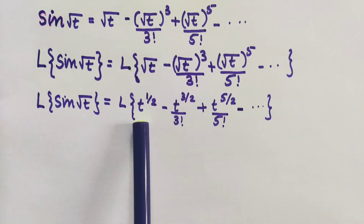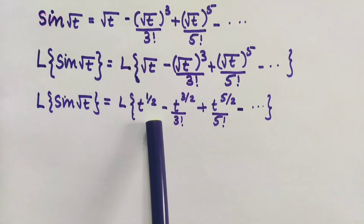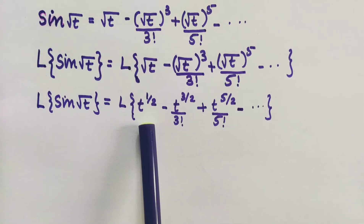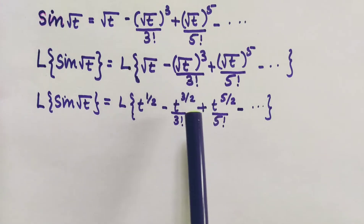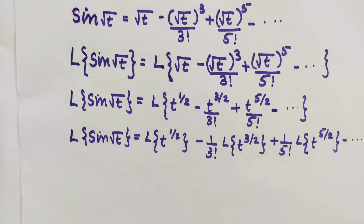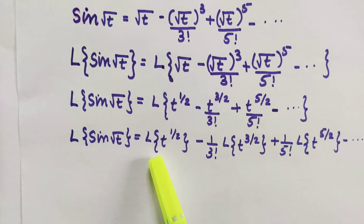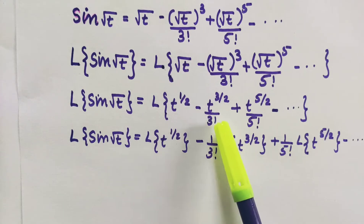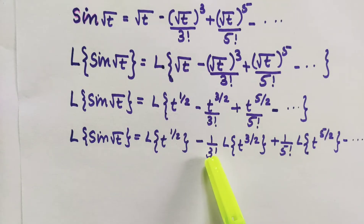√t can be written as t^(1/2), (√t)³ can be written as t^(3/2), and so on. Using the linearity property of the Laplace transform, we can write L{sin(√t)} as L{t^(1/2)} − (1/3!) · L{t^(3/2)} + (1/5!) · L{t^(5/2)} and so on.